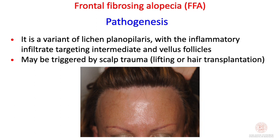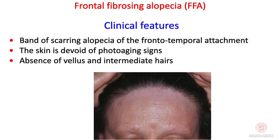A trigger event before onset — such as a facelift or hair transplantation — may sometimes be identified, but not always. Clinical features are characterized by a band of scarring alopecia at the frontal-temporal attachment. The skin is white, less pigmented than the rest of the face due to the absence of photo-aging signs, and there is also absence of vellus and intermediate hairs.